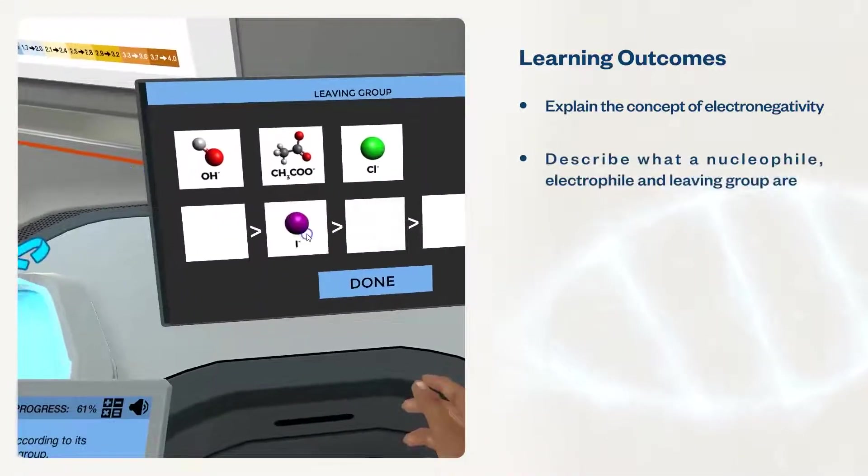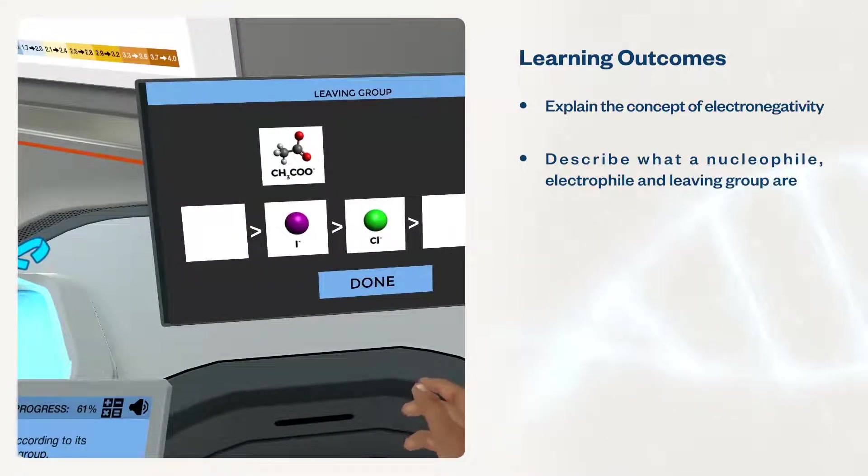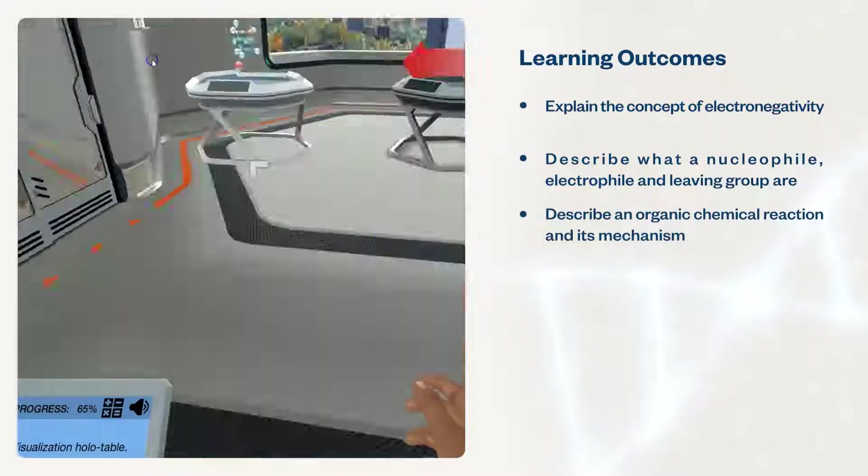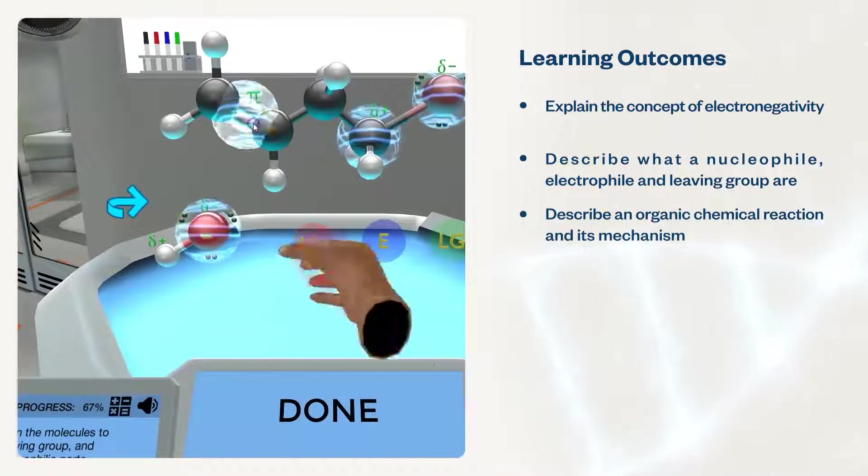Describe what a nucleophile, electrophile, and leaving group are, and identify them. Describe an organic chemical reaction and its mechanism using the correct terminology and notations.